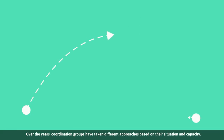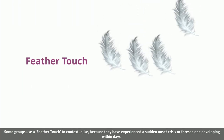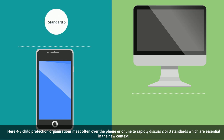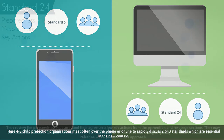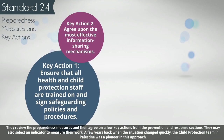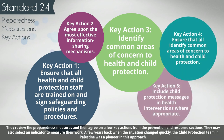Over the years, coordination groups have taken different approaches based on their situation and capacity. Some groups use a feather-touch approach because they've experienced a sudden onset crisis or foresee one developing within days. Here, four to eight child protection organizations meet, often over the phone or online, to rapidly discuss two or three standards which are essential in the new context. They review the preparedness measures and then agree on a few key actions from the prevention and response sections. They may also select an indicator to measure their work.